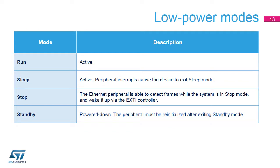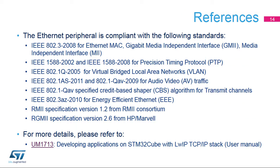This slide provides an overview of the peripheral status in each of the low-power modes. Only PMT mode is available in stop mode; in this mode, the peripheral waits for wake-up packets. The Ethernet peripheral is compliant with the following IEEE standards for supporting Ethernet MAC specification, VLAN, P2P, AVB features, and energy-efficient Ethernet.